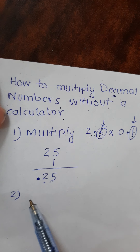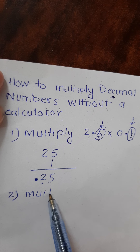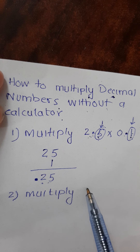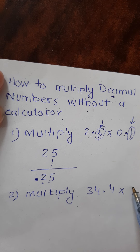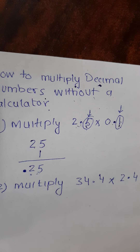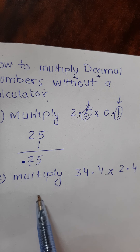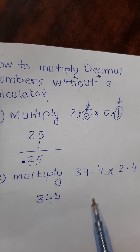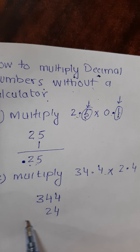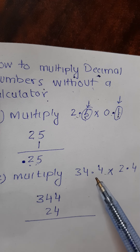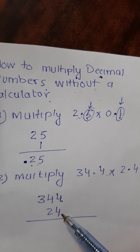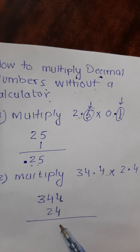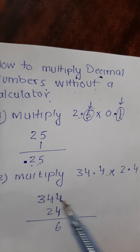Consider another example: multiply 34.4 into 2.4. Multiply these digits without initially taking into account the decimals — 34.4 is written as 344, and 2.4 is written as 24. Multiply them: 4 times 4 is 16, carry 1.